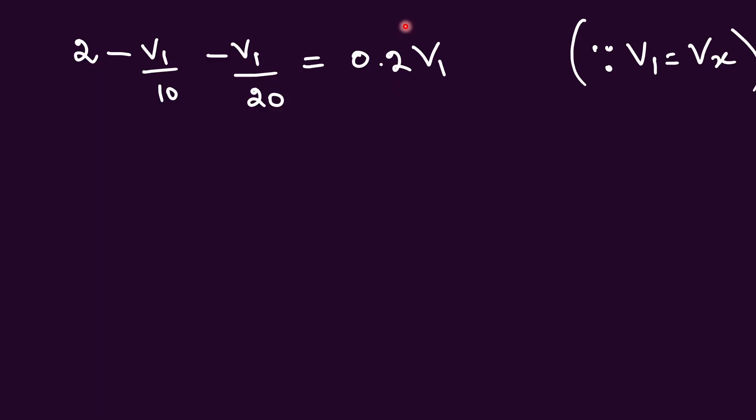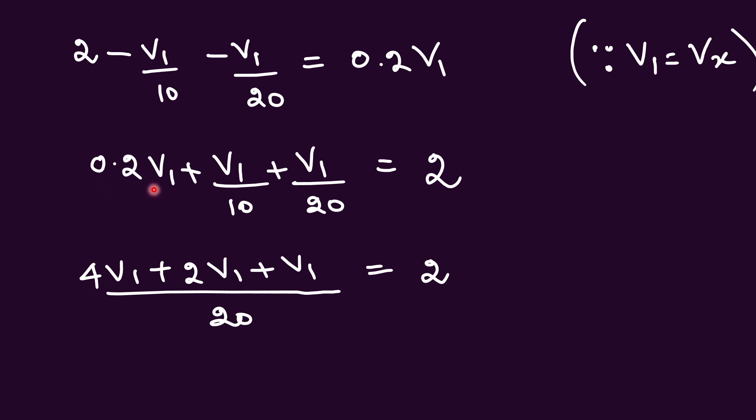Now I am going to replace this Vx by V1 because we have taken this. So we keep this 2 here. Other terms are brought to the right-hand side. We get this as 0.2 V1 plus V1 by 10 plus V1 by 20. We can write this as 0.2 V1 plus V1 by 10 plus V1 by 20 equal to 2.